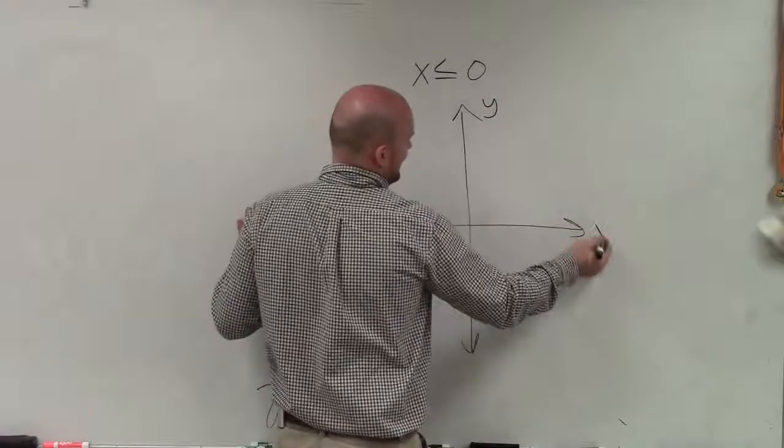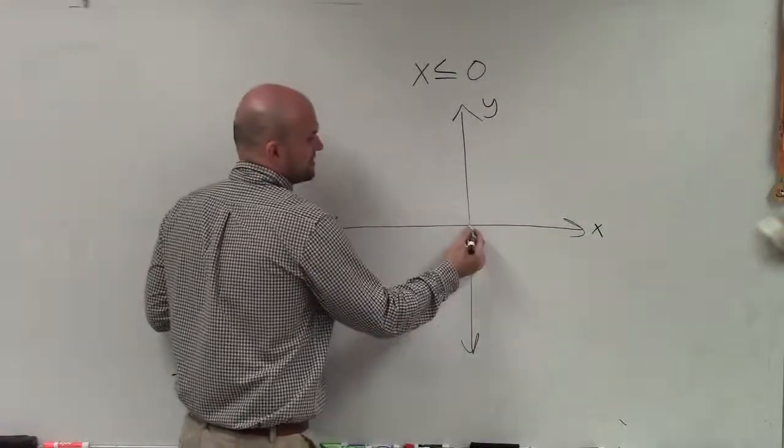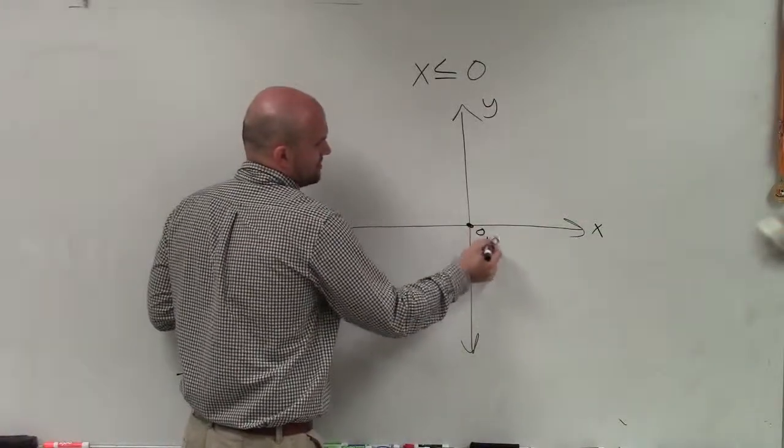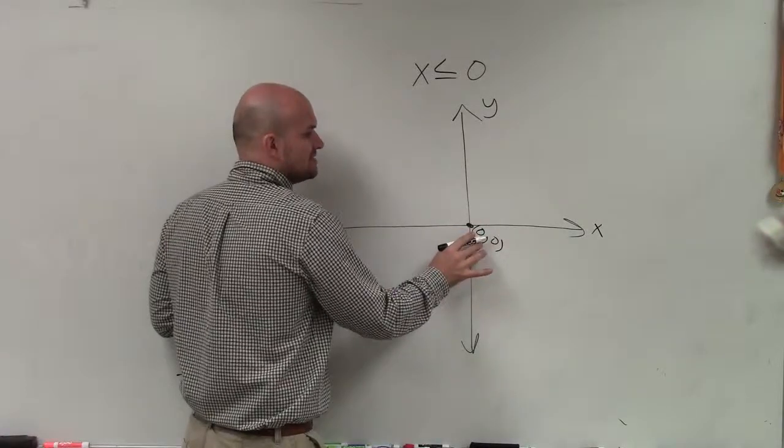Well, we have a y-axis and an x-axis. The main important thing is at the origin, that point is 0 comma 0, meaning the value of x is 0, the value of y is 0.